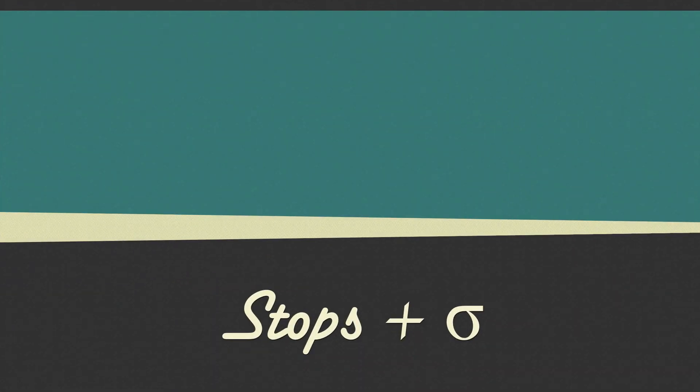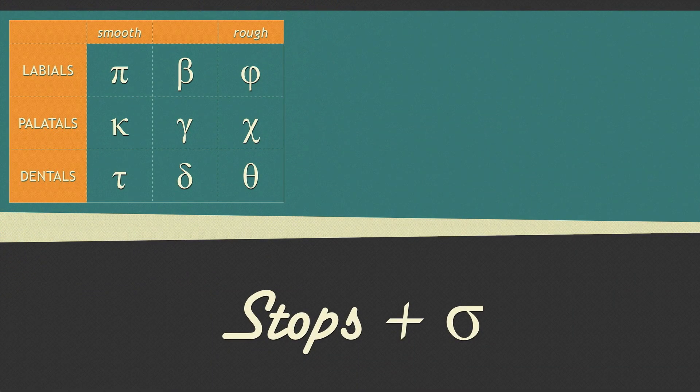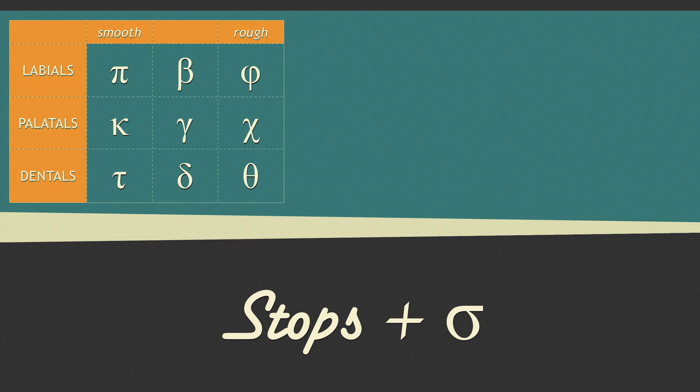Now let's talk about the stops. The stops are frequently put into a table like this, called the table of stops or square of stops.